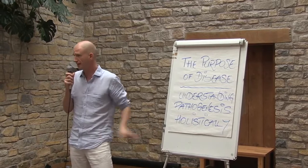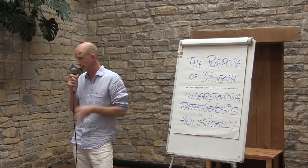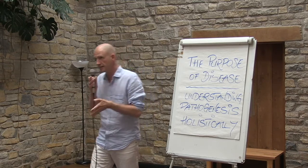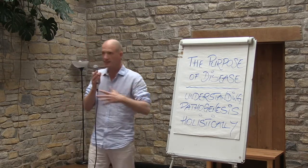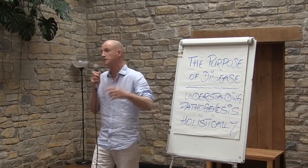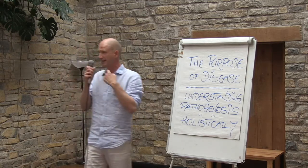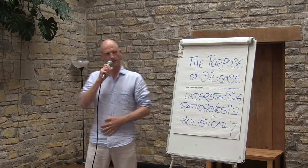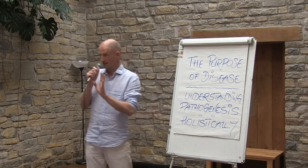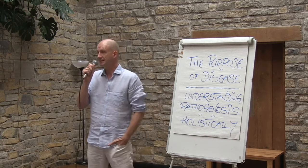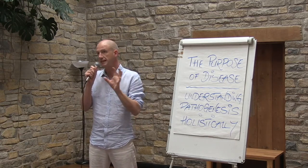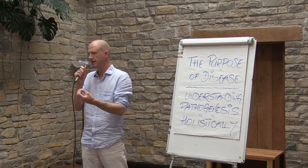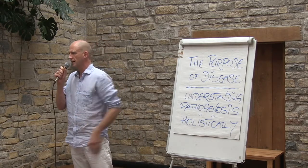Everything we've learned in our studies — these are all lenses that we use. The Chinese use the yin and yang lens and see something totally different through it, but it makes sense. These are lenses that allow us to make sense of what's going on in front of us. So we get an understanding. What are the lenses we can use on a mind level?